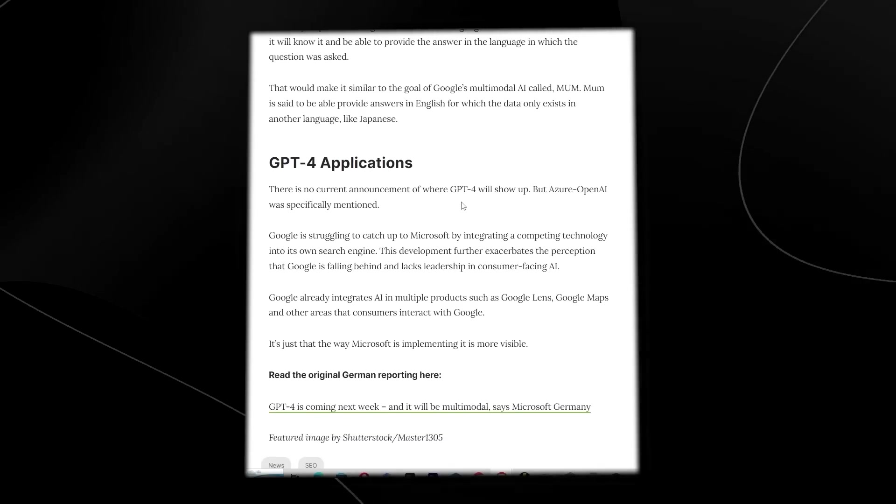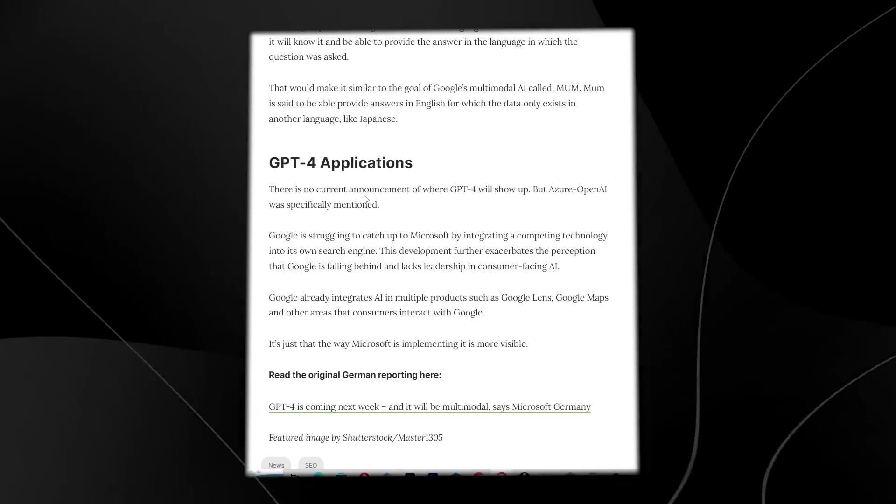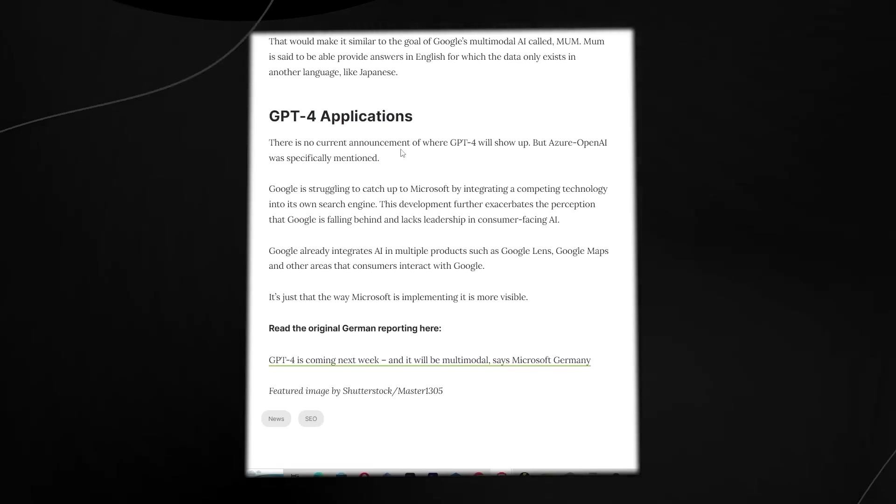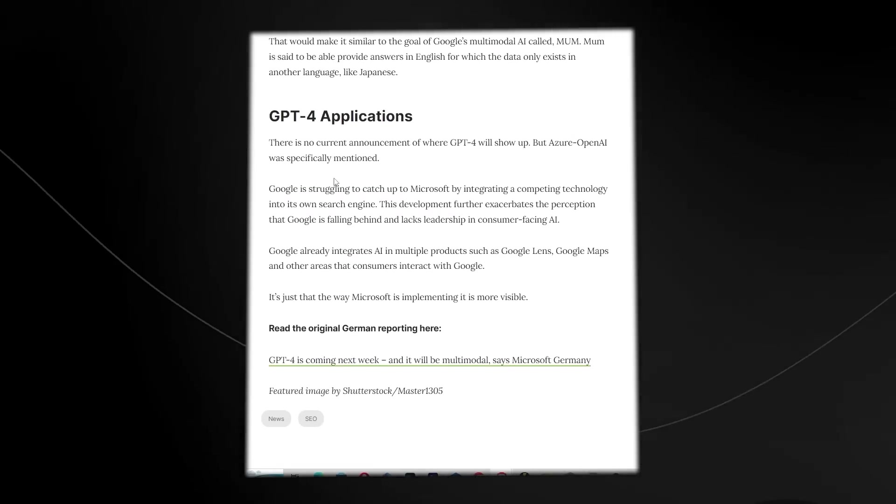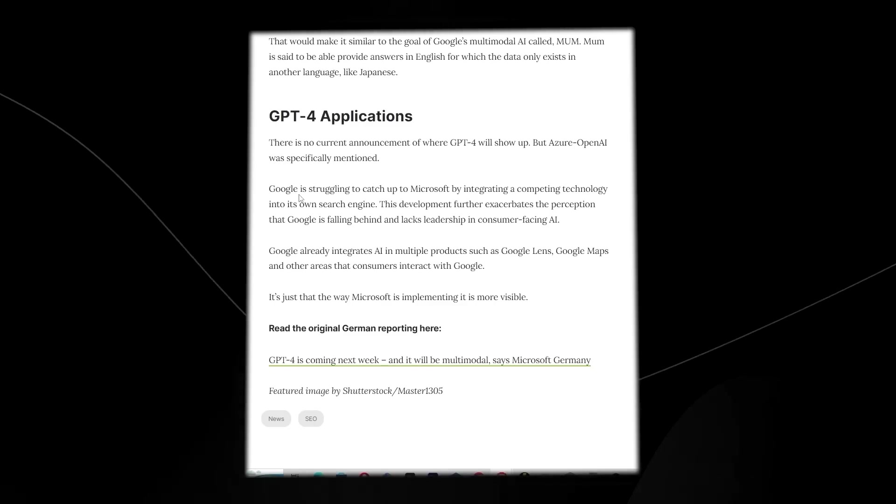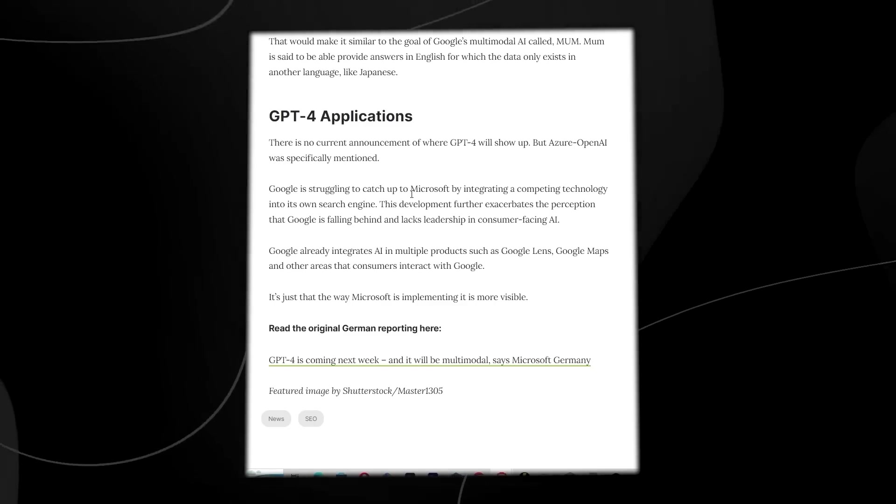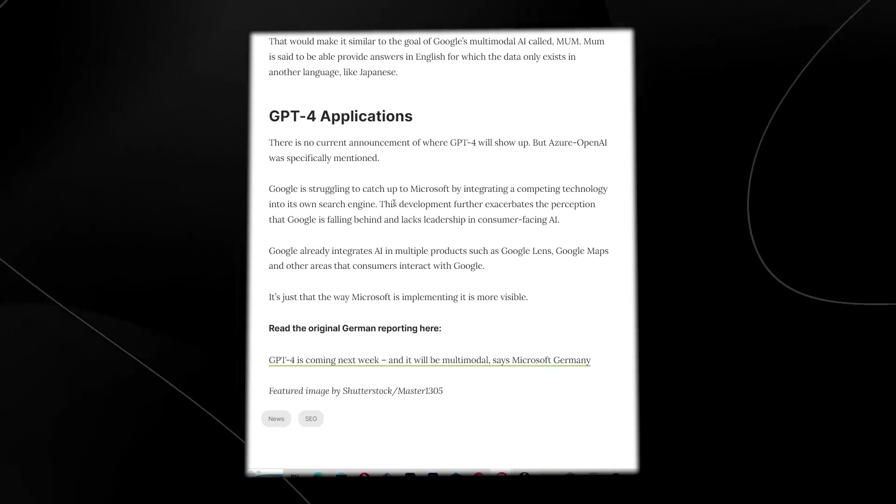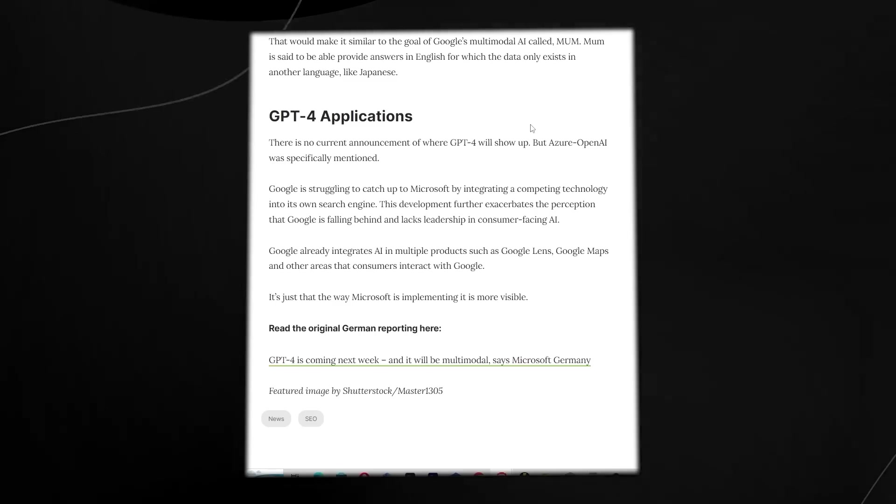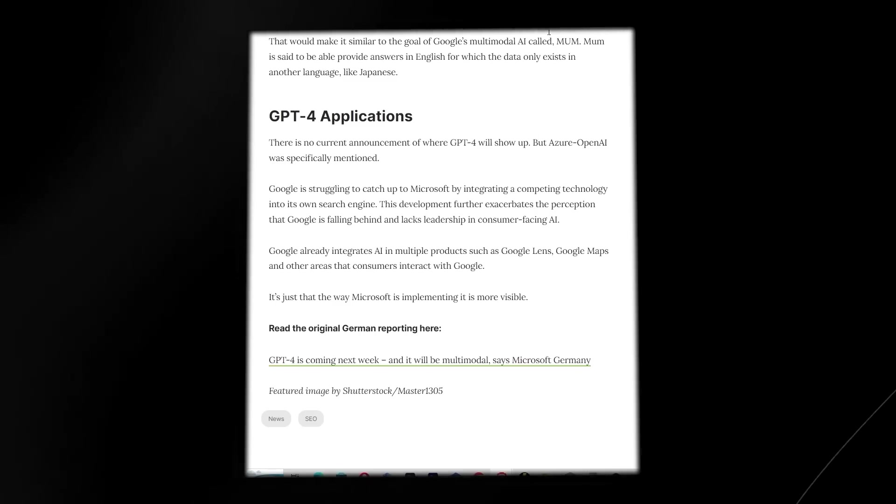It seems that Microsoft is winning the AI race as things start to ramp up. But it says there is no current announcement of where GPT-4 will show up, but the Azure OpenAI was specifically mentioned. And of course, you can see Google is struggling to catch up to Microsoft by integrating competing technology into its own search engine, which we already know recently did fail, which did tank the stock price.